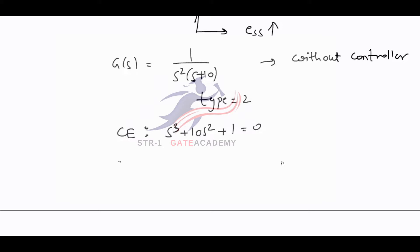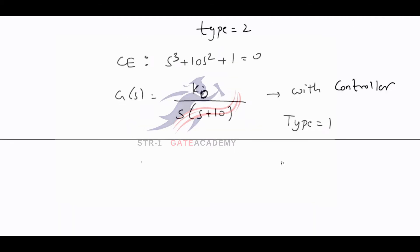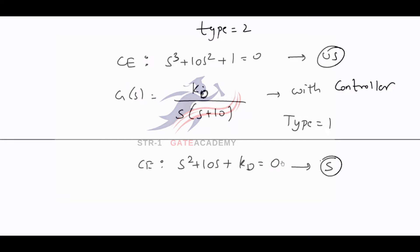With controller, the transfer function will become KD into S, so S and S will cancel, giving 1/(S × (S+10)). Now, the type of the system is 1 and the characteristic equation is S² + 10S + KD = 0. This system is stable whereas the previous system was unstable, because here all the powers of S are present whereas there S power 1 was missing.